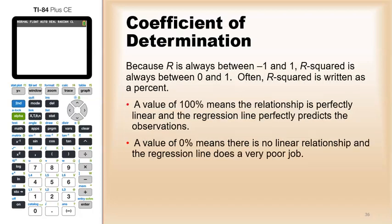Now, the correlation is always between negative one and positive one. So if you square those numbers, that's always going to give you a value that's between zero and one. And often r squared is written as a percent.